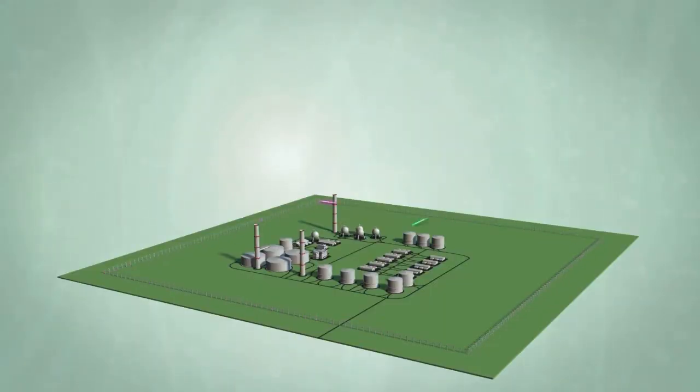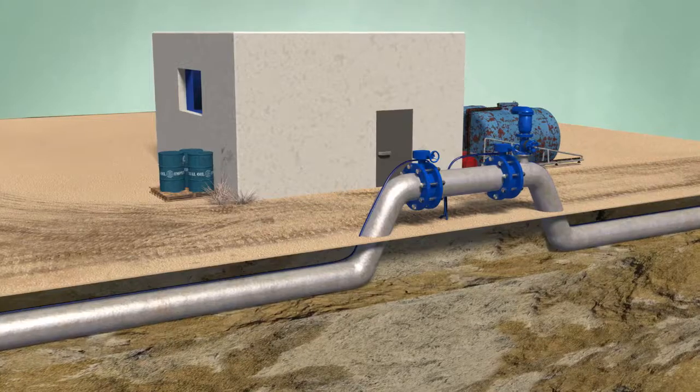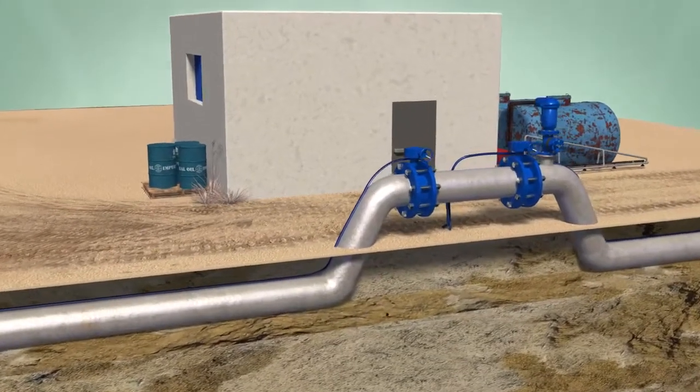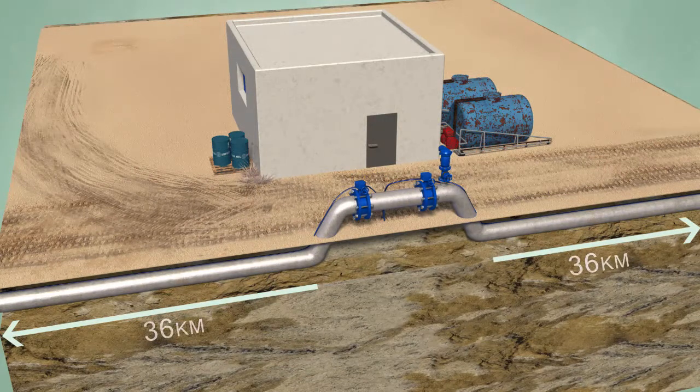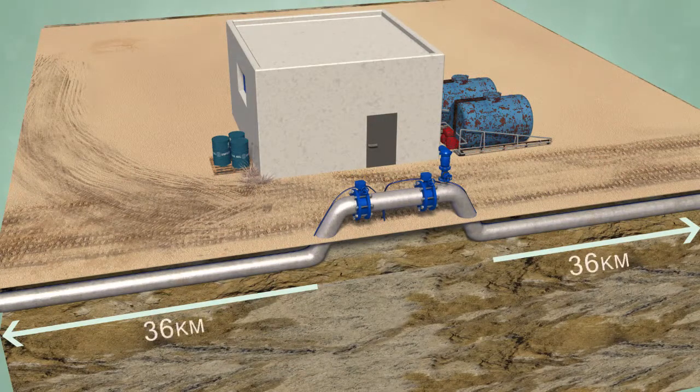A redundant configuration would stream light clockwise and counterclockwise simultaneously enabling full functionality even if the cable is cut. The extended range system for pipelines minimizes the number of infrastructure locations where equipment needs to be installed.